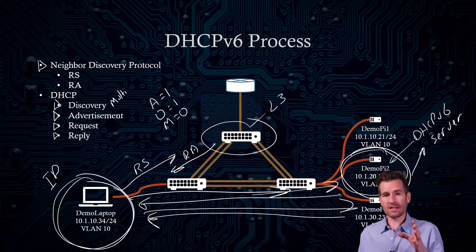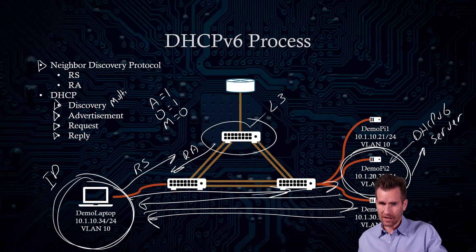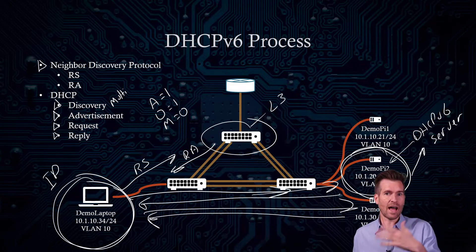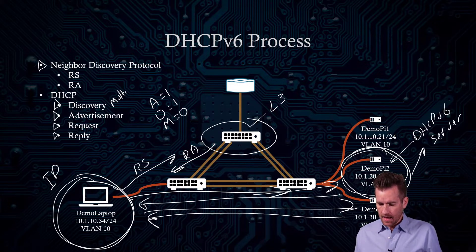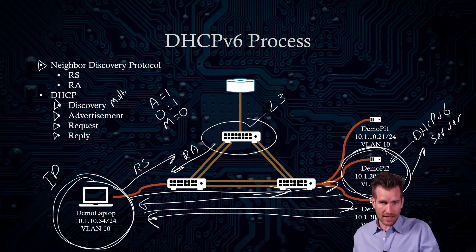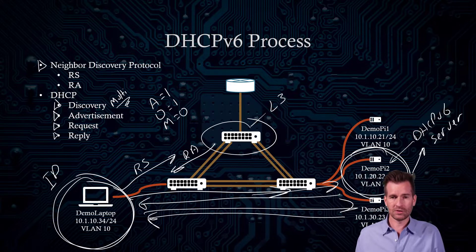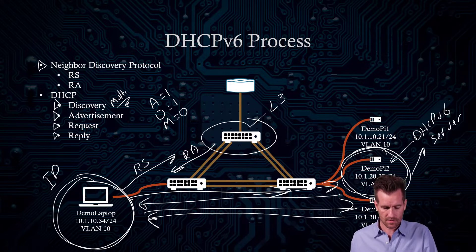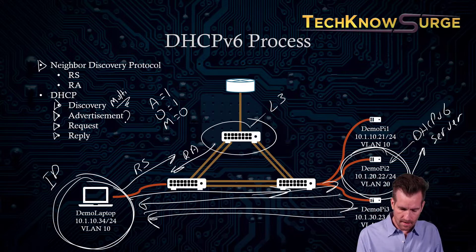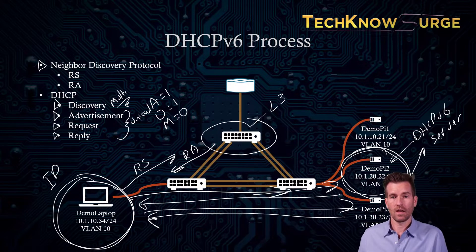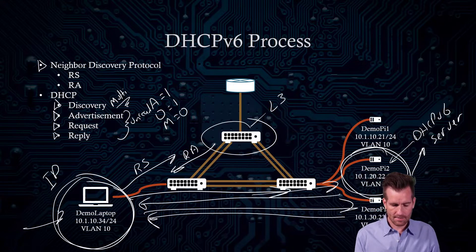Since IP version 6 doesn't have broadcast, when we take a look at the DHCP process for IP version 4, we will have some broadcast in there. There's no broadcast for IP version 6. So what happens is the first one is a multicast to all the DHCP servers, but the rest of these are all unicast and sent directly to this demo laptop.